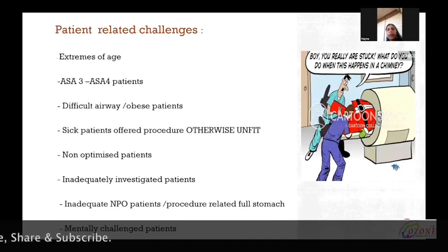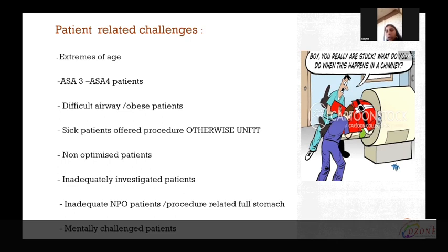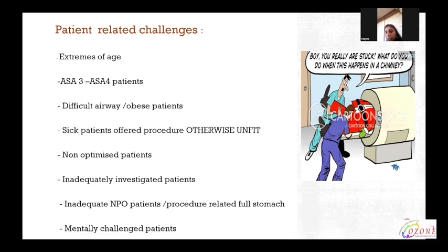What are the patient-related challenges? Today we will focus on NORA for CT and MRI only. The patients coming to radiology suites for investigations are extremes of age — from day one to 90 years old. They are ASA 3 or 4 patients, difficult airway or obese patients. It is difficult to fit them in MRI or CT tunnel and the airway is difficult to reach. Sick patients offered procedures but otherwise unfit, non-optimized patients, some emergency diagnostic procedures like stroke protocol where we don't have time to optimize. Then inadequately investigated patients, inadequate NPO patients, or procedures related to full stomach like MRCP scan, and mentally challenged patients.